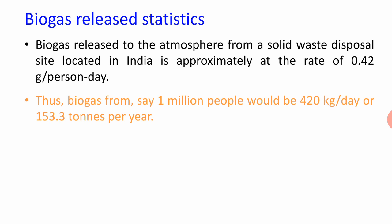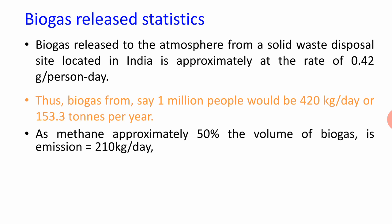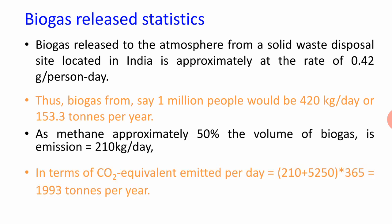Biogas from 1 million people would be approximately 420 kg per day, or 15.3 tons per year — this is the amount released into the atmosphere that we can trap. Methane is approximately 50% of the volume of biogas, amounting to around 10 kg per day. The CO2 equivalent emitted per day due to this biogas amounts to approximately 1,993 tons per year.